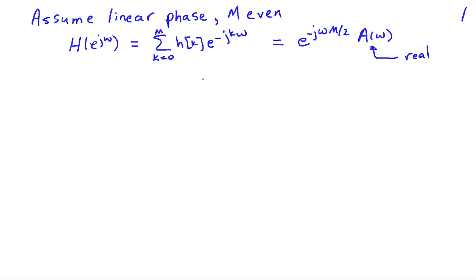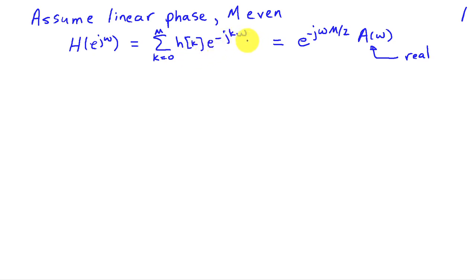In our derivation here, we're going to assume that the filter is a linear phase FIR filter, that the order is even, and so the frequency response can be expressed in terms of the m plus 1 samples of the impulse response as a sum from k equals 0 to m of h[k] times e to the minus jk omega. We assume linear phase, so it has phase factor e to the minus j omega m over 2, and then a real-valued magnitude function.